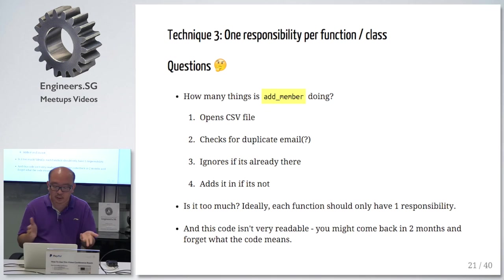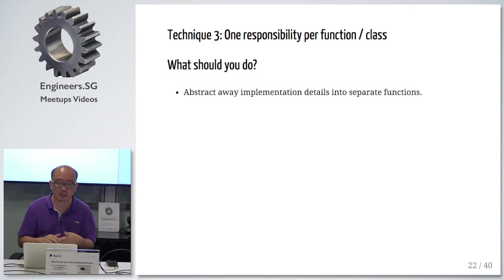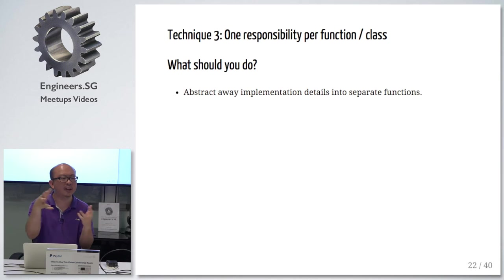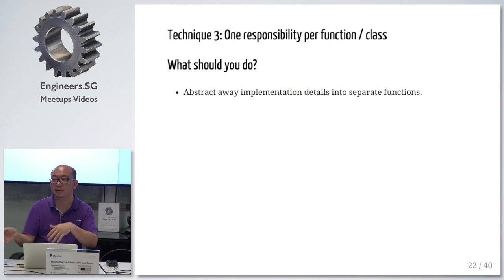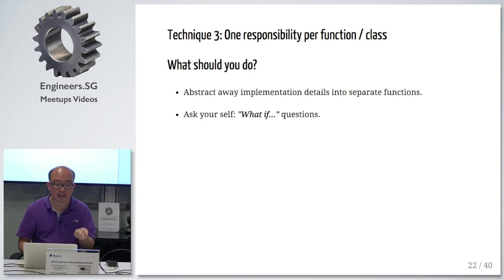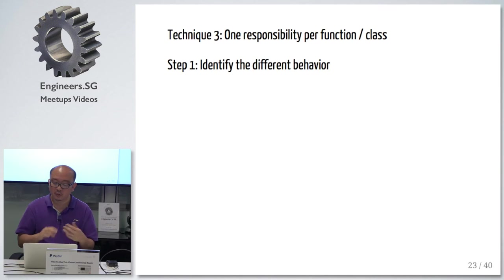If you can sense your eyes twitching, you are in the right company, because we are all craftsmen. We want to build things we can be proud of. If you're twitching like I was when I wrote that code, I feel very dirty. So what should you do? If you come back to this same piece of code two months later, it still confuses you. You should probably abstract away the implementation details into separate functions — like opening a file, closing a file, writing to it. These are all implementation details. What do we want to do? We want to add a new member into the list.